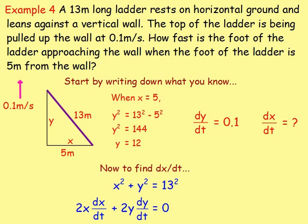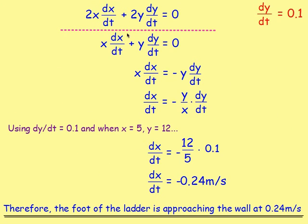These questions get slightly harder. This one was about a ladder sliding against a wall, so it's best to draw a triangle. The ladder is 13 metres long. You want to find how fast the foot of the ladder is approaching the wall when it's 5 metres away. Using Pythagoras, the height is 12. You know x² + y² = 13². Differentiate with respect to t, sub in dy/dt, x, and y, and you find dx/dt. Getting a negative answer of −0.24 metres per second means the foot is approaching the wall at 0.24 metres per second.